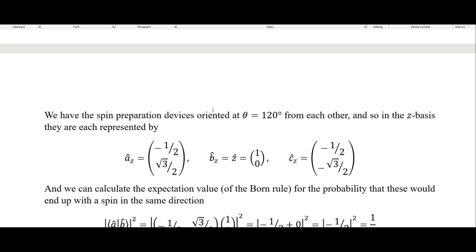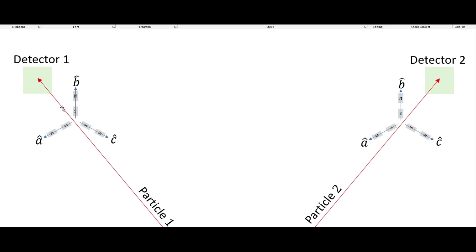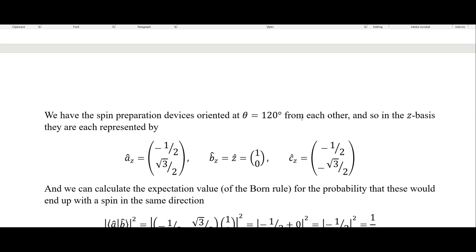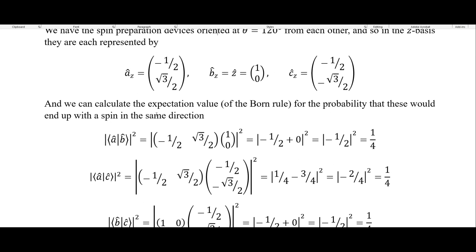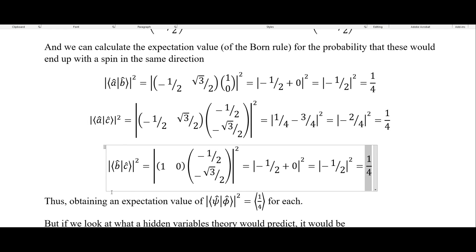So we have the spin preparation devices angled at 120 degrees from each other — between each is 120 degrees, adding up to the full 360 degrees. In the z basis they are each represented by specific vectors: this is A in the z basis, B in the z basis is just our z, which is just one and zero, and C in the z basis is this expression. We can calculate the expectation value using the Born rule for the probability that these would end up with a spin in the same direction. Running those calculations for each, we see that we get one fourth for each, thus obtaining the expectation value of one fourth.